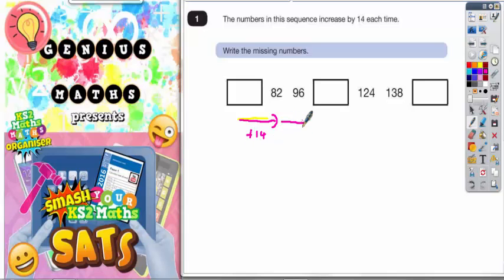From 82 to 96 we're adding 14. From 96 to this box is add 14. From this box to 124 is add 14. Then we're adding 14 to get from 124 to 138. Then we're adding 14 to get from 138 to this box.